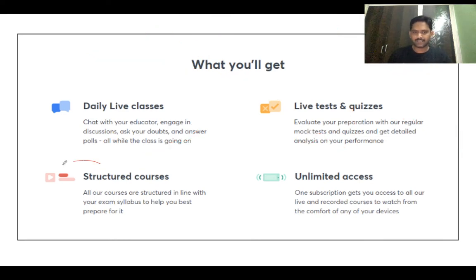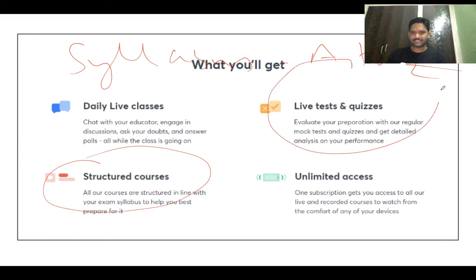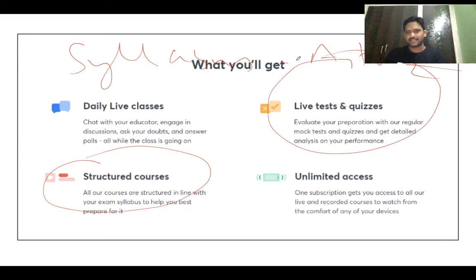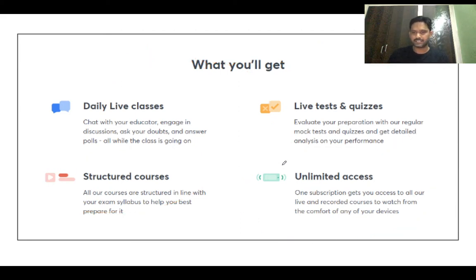The courses available on the Unacademy Learning App are structured and comprehensively deal with the syllabus from A to Z. You have live tests and quizzes conducted very often by educators, and most importantly, you have unlimited access to the content. You can watch the videos any number of times from the comfort of any of your devices, at any place of your choice.